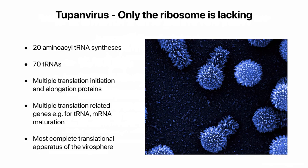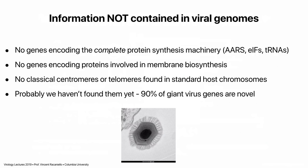Could a virus evolve to gain ribosomes? It could theoretically, but you'd still need a cell for energy, precursors, and so forth. And if it did all that, it would no longer be a virus — it would be a cell. A virus is an obligate intracellular parasite; once it can do everything on its own, it becomes a cell. Viruses were probably once cells that escaped and became reduced. We'll come back to that when we discuss evolution.